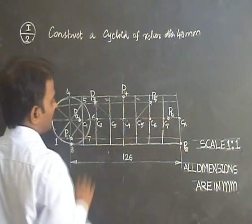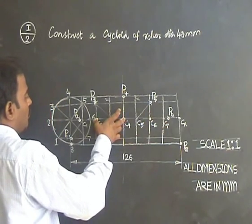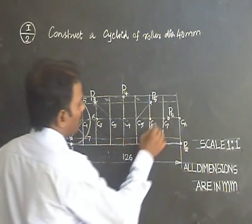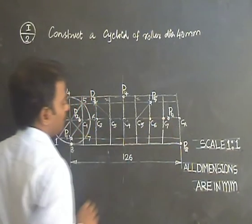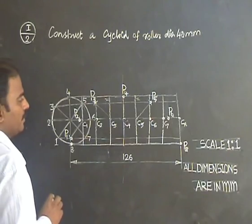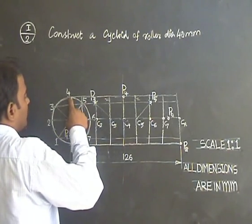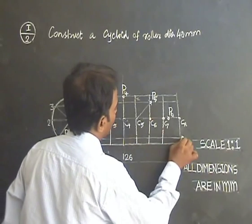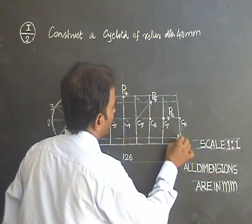Keeping C7 as the center with the fixed roller radius, make an arc on the line connected with 7. You will be getting one point, that is P7.